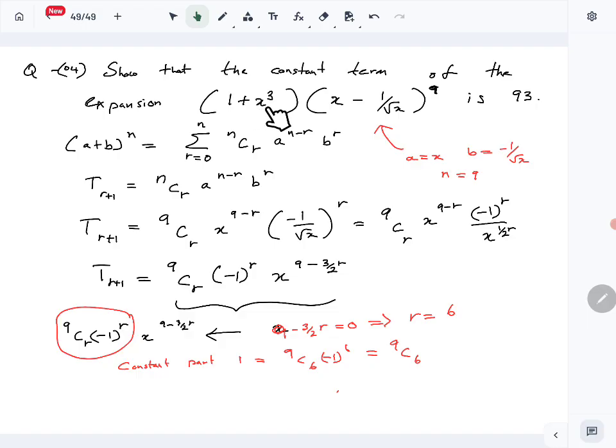Then the second constant part you can create is when you multiply the general term by X cube. So multiply the general term by X cube, 9CR minus 1 R, multiply by X cube, so then this becomes 9CR minus 1 to the R, X to the 12 minus 3 over 2R. Then this becomes constant when this exponent is 0. So you want this to be 0, so that happens when 12 minus 3 over 2R is equal to 0, or when R equals 8.